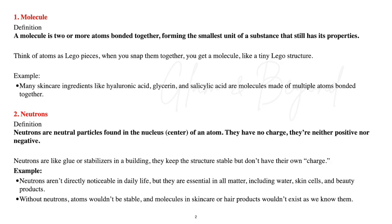Number two: neutrons. Neutrons are neutral particles found in the nucleus of an atom. They have no charge — they're neither positive nor negative. Neutrons are like glue or stabilizers in a building; they keep the structure stable but don't have their own charge. They are essential in all matter, including water, skin cells, and beauty products. Without neutrons, atoms wouldn't be stable and the molecules in skincare or hair products wouldn't exist as we know them.